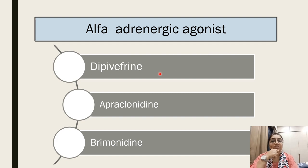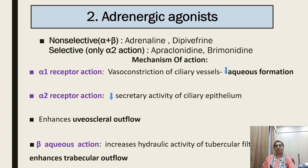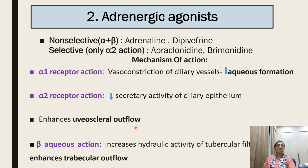Alpha adrenergic agonists include dipivefrin, apraclonidine, and brimonidine — all act on alpha receptors. Non-selective agents acting on both alpha and beta receptors include adrenaline and dipivefrin, while alpha-2 selective agonists are apraclonidine and brimonidine. Alpha-1 receptor action causes vasoconstriction of ciliary vessels and decreased aqueous formation; alpha-2 receptor action decreases secretory activity of the ciliary epithelium and enhances uveoscleral outflow.